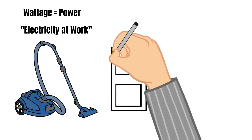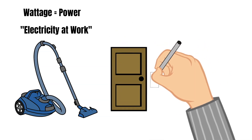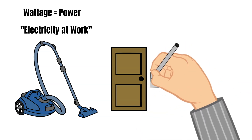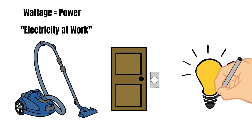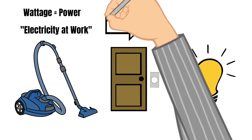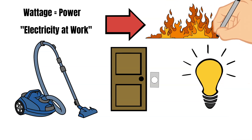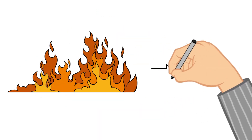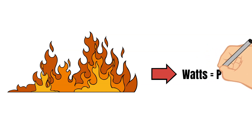Wattage is the power it takes to actually do something, whether it's running a vacuum, ringing the doorbell, or turning on a light bulb. Whenever current flows through a resistance, heat results — this is inevitable. The heat can be measured in watts, abbreviated with a capital W, and this represents electrical power.